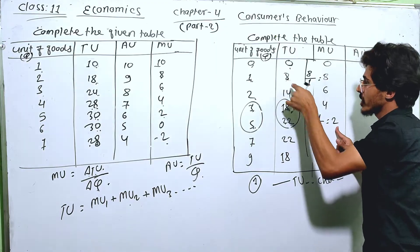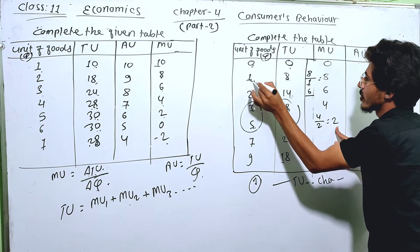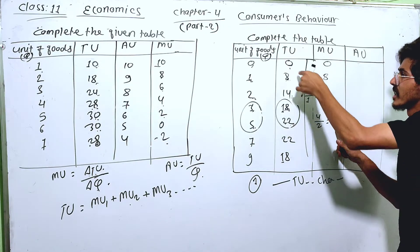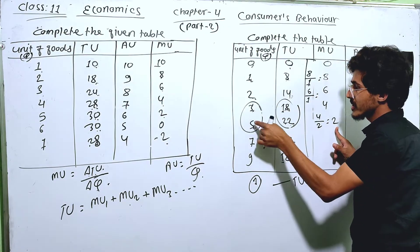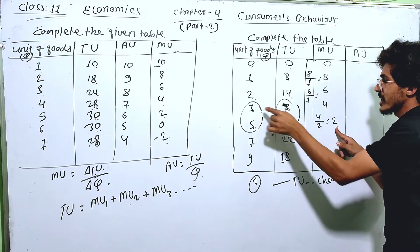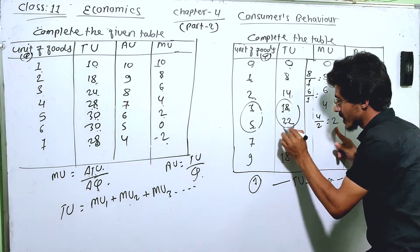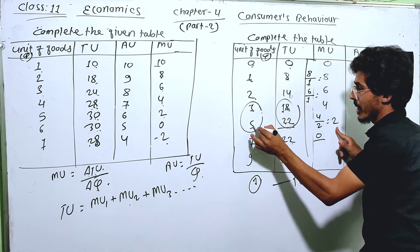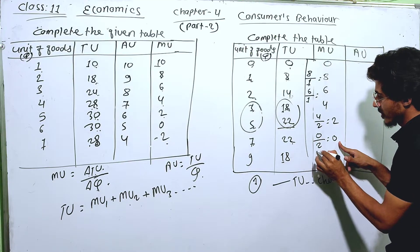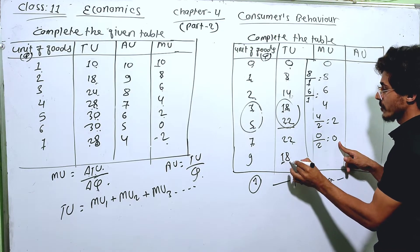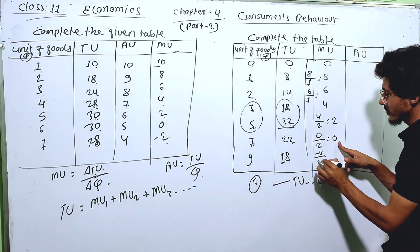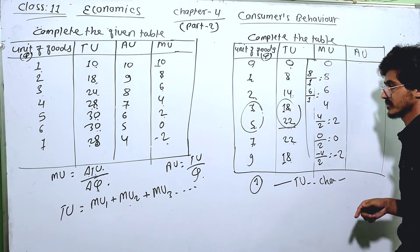8 to 14 is 6, and the difference is 6. Six divided by 1 is 6. The change in quantity is 1. 22 to 18, there is a difference of 4, which is minus 4. Divided by 1 is minus 2.